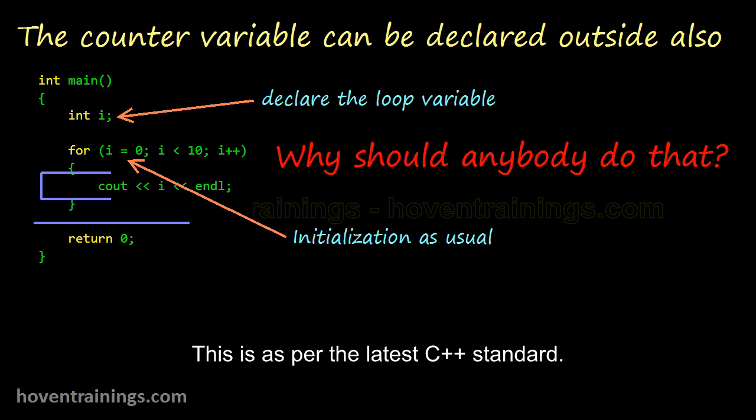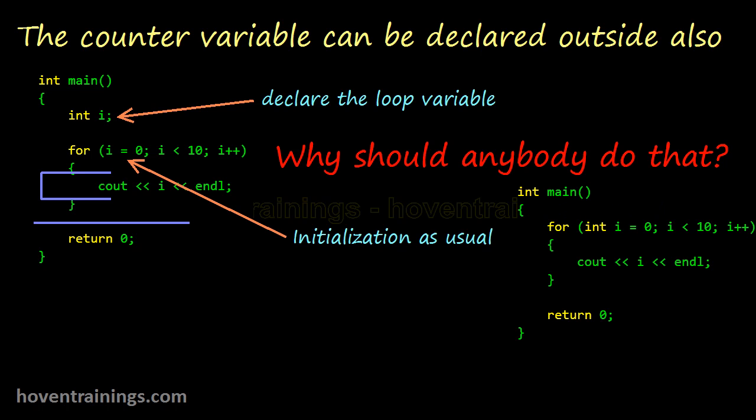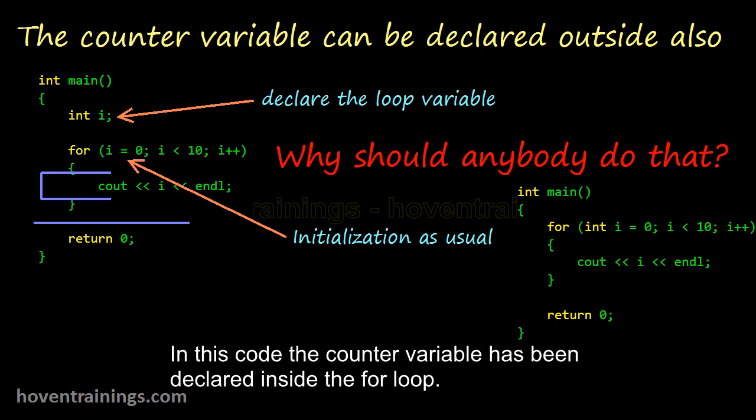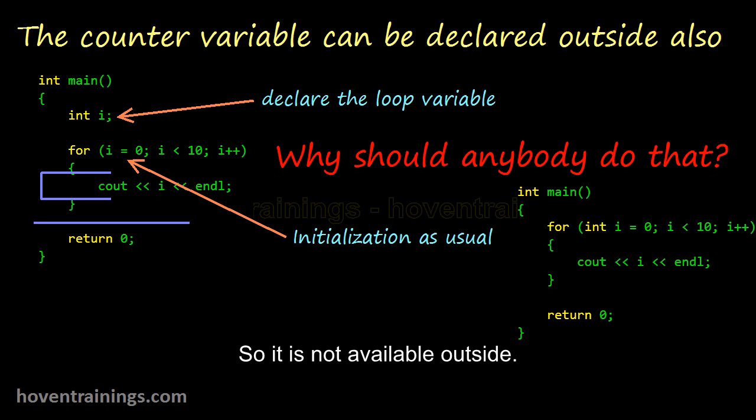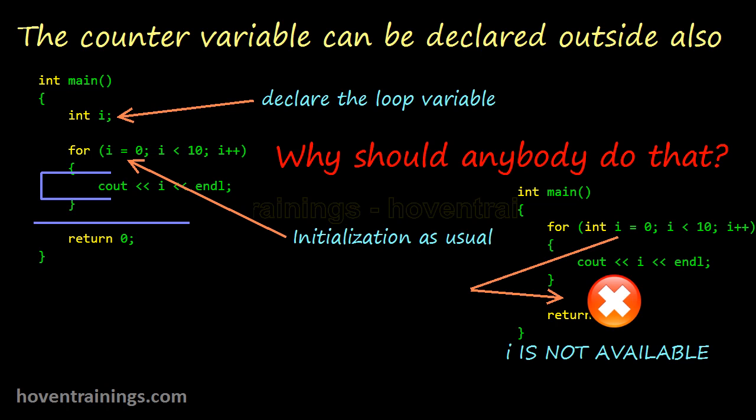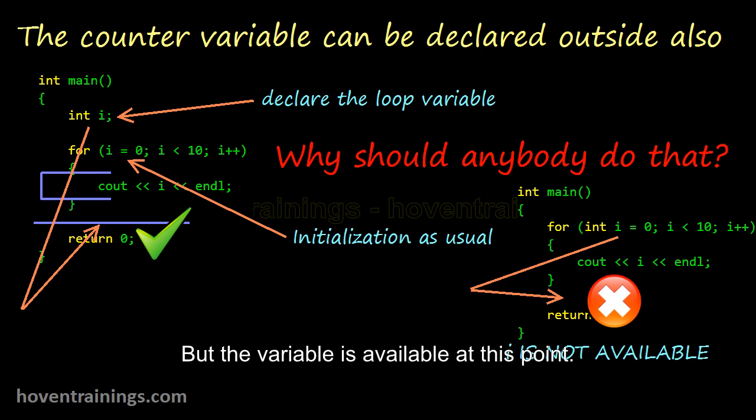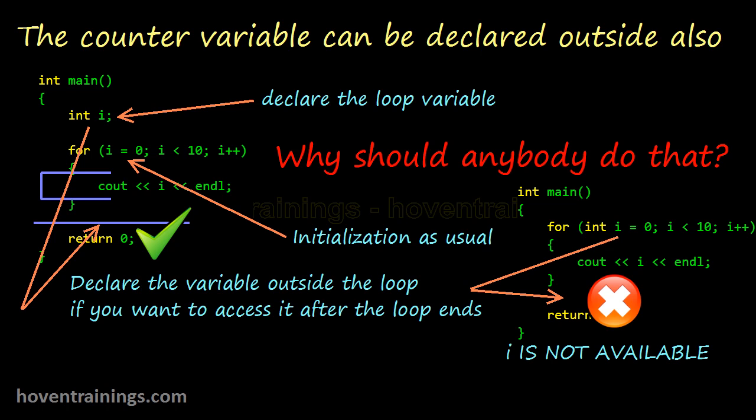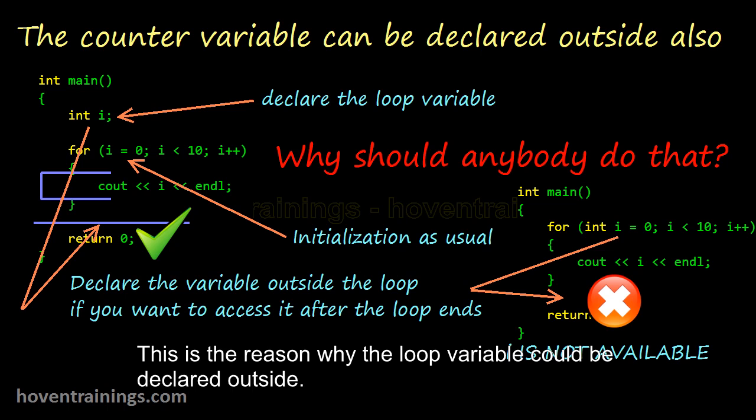This is as per the latest C++ standard. In this code the counter variable has been declared inside the for loop, so it is not available outside. The counter variable is not available at this point, but the variable is available at this point. This is the reason why the loop variable could be declared outside.